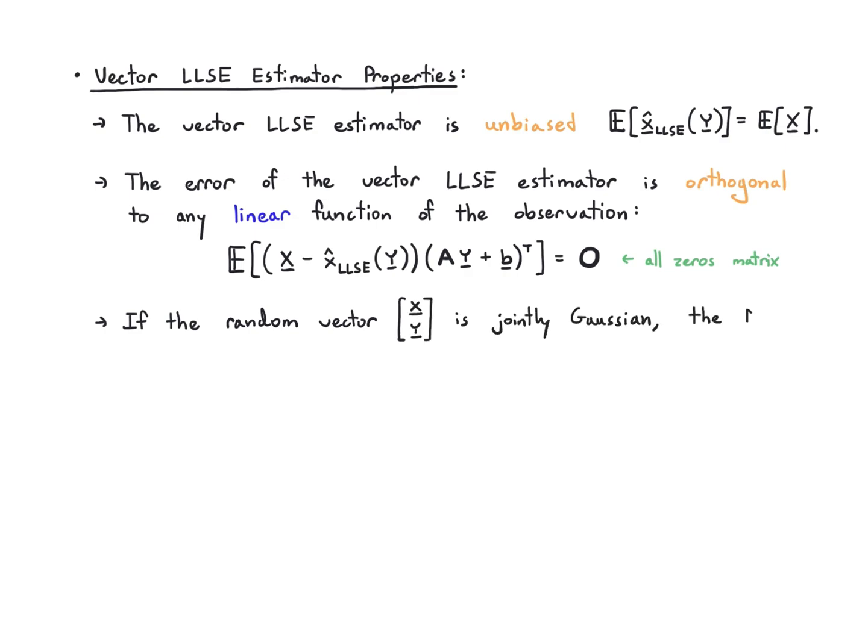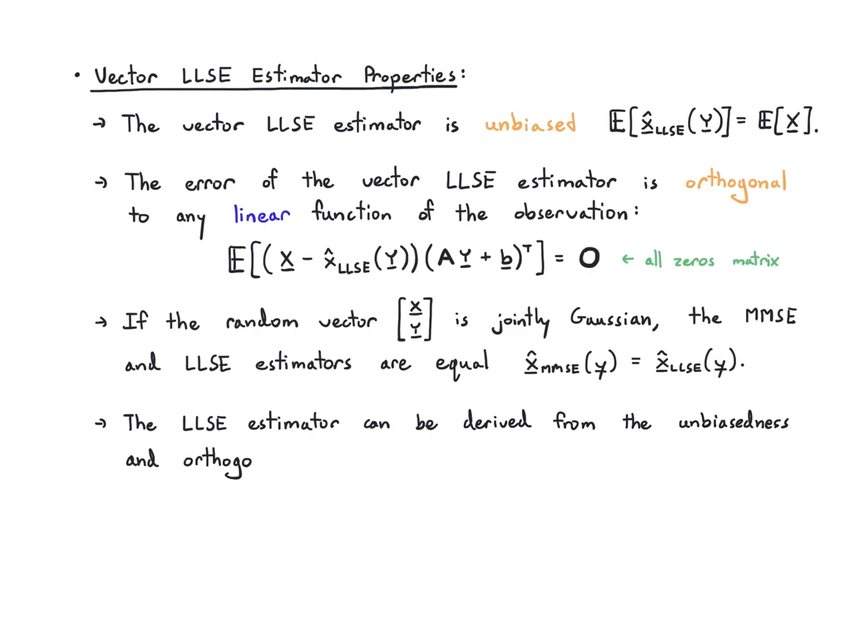If I have a jointly Gaussian vector, then the MMSE estimator is the same as the LLSE estimator, because Gaussians are nice in that lots of things work out to be linear for Gaussians. We can derive this estimator from the unbiasedness and orthogonality properties. If you believe you need those in order to have the best possible linear estimator, and you can show that that's true, then you can derive the form of the estimator.